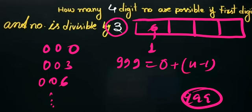plus (n-1) into d, where d is 3. So 3n minus 3, and 3 plus will be here.